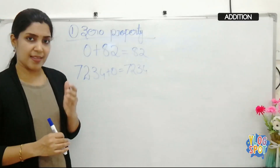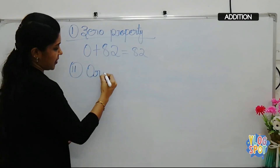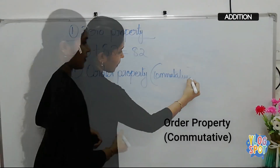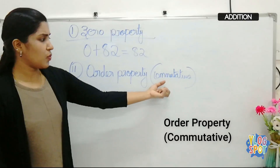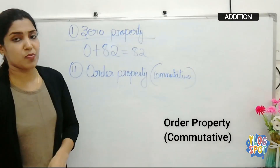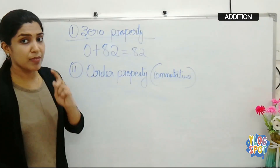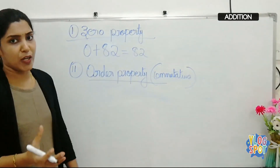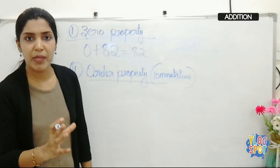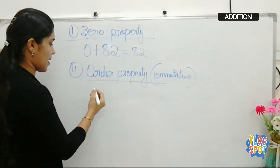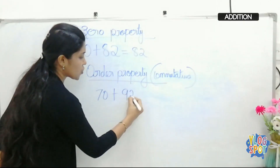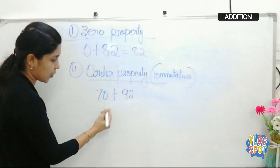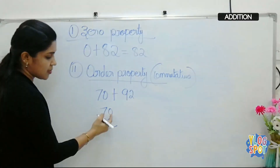The second property is the order property of addition, also known as the commutative property. For elementary classes we say order property; for higher grades we use the term commutative property. In the order property, if we change the order of the addends, the result stays the same. For example, take 70 plus 92, written vertically with proper alignment.